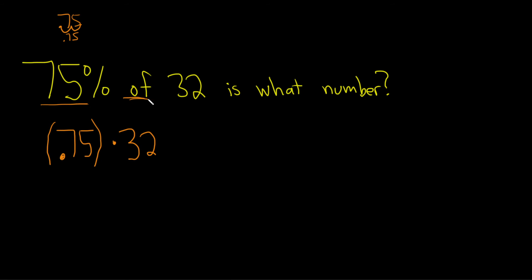So 75% of, again, of means multiply. Then it says is what number? So is means equals. And then for the number, we can use any letter we want. Let's use x.